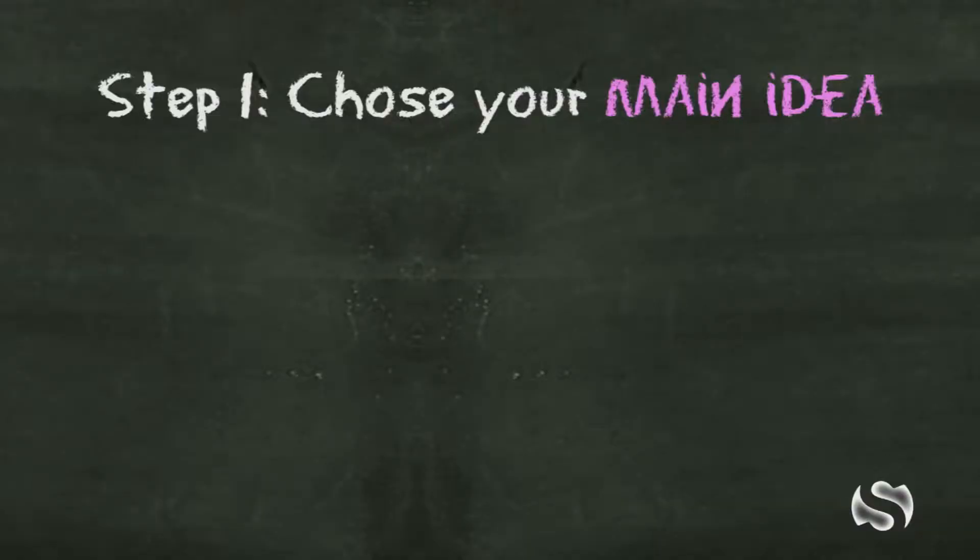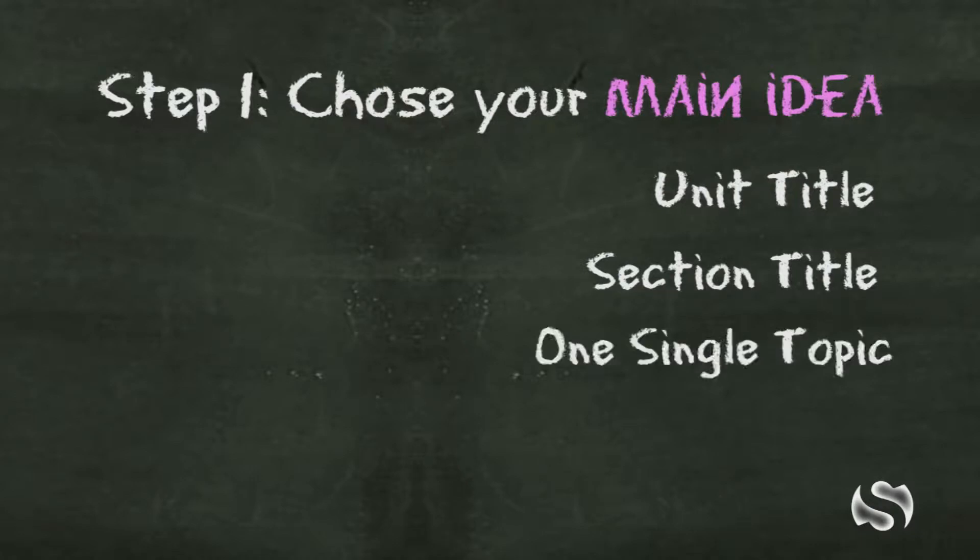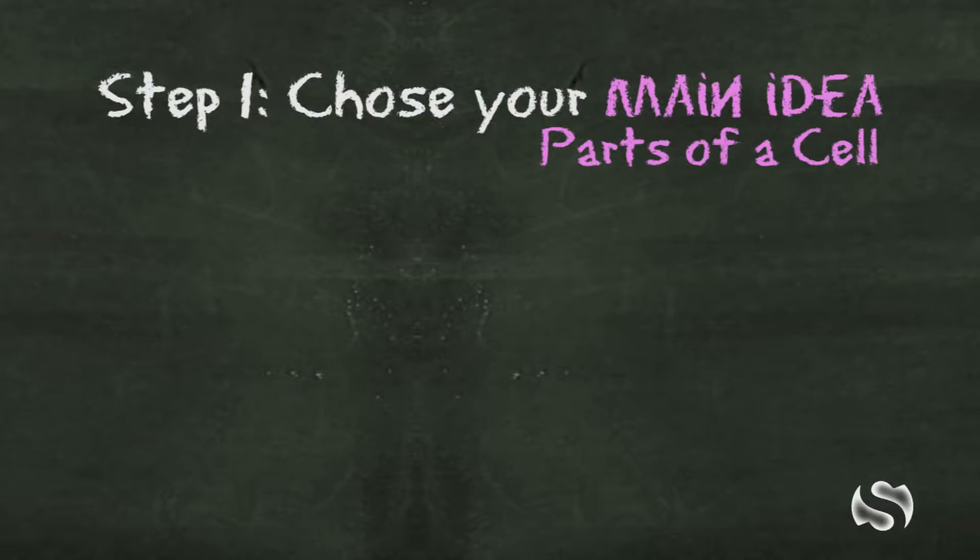The first step is you need to choose your main idea. So this is probably the unit title or the section title, or if it's a smaller quiz, maybe it's just one single topic. In this case, we'll use parts of a cell. So now you take this main idea and you're going to put it in the center of your concept map in a box, so you can always reference back to that main idea and you know what your concept map is covering.